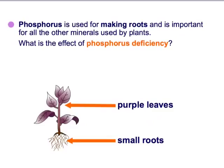With phosphorus deficiency, we can see that we've got purple leaves. The purple leaves are a secondary result of not having proper roots. Because phosphorus is needed to make those root hair cells, the small roots that result from this deficiency mean we're not getting the other minerals up to the leaves — and hence we get purple leaves and small roots.